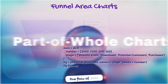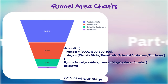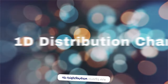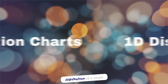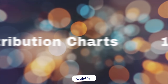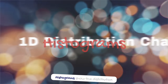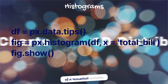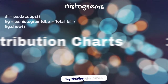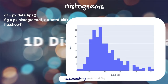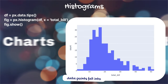Funnel area charts combine aspects of funnel charts and area charts, showing the flow of data while visualizing the total amount at each stage. 1D distribution charts are used to visualize the distribution of a single variable. Histograms show the distribution of a numerical variable by dividing the range of values into bins and counting how many data points fall into each bin.